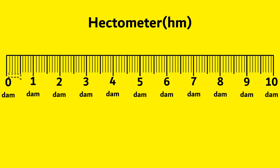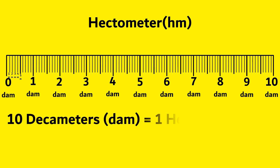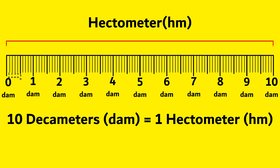Next, hectometer. 10 dekameters is equal to 1 hectometer. From 0 dekameters to 10 dekameters is equal to 1 hectometer.